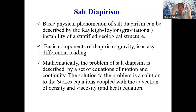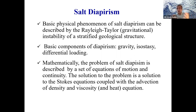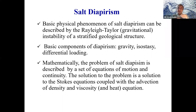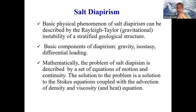Why does the layer move upward? Because of the Rayleigh-Taylor instability, which tells us that if you consider a simple case of two layers — one on top of the other — and the top layer is denser than the lower layer, then if there is a very small perturbation at the interface, the lower layer starts to go upward because it is lighter, and the heavier layer goes down. The structure that appears is called a diapir. Salt exhibits exactly this behavior.